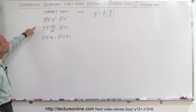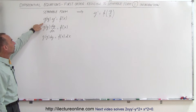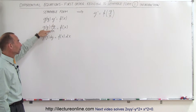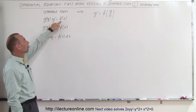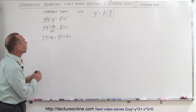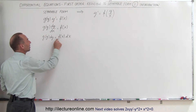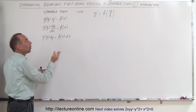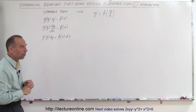What we learned before is: if we have the form — some function of the variable y times y prime, which is of course dy/dx — equal to some function with the variable x, then we can separate the variables. We can write f(x) dx = g(y) dy and then integrate both sides and solve the problem that way.